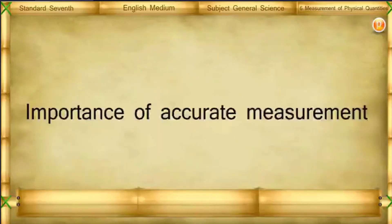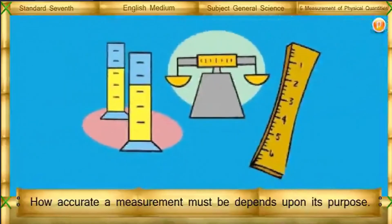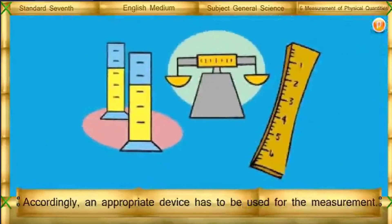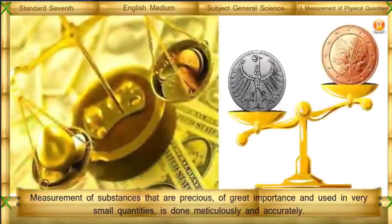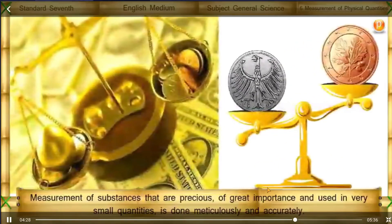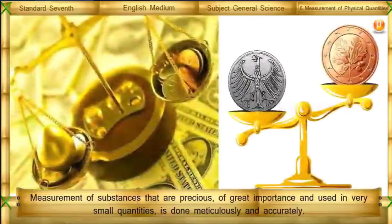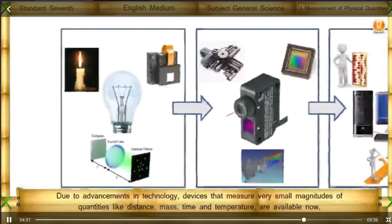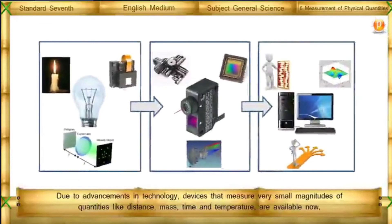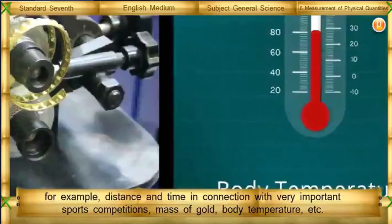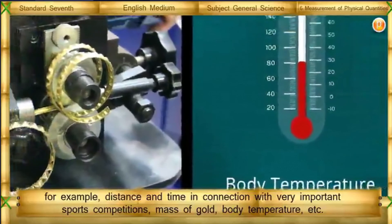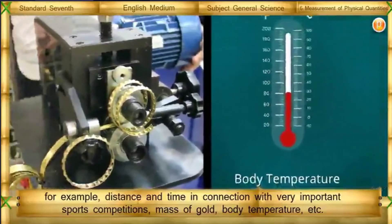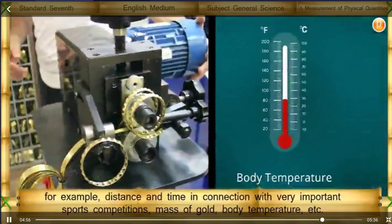Importance of accurate measurement: How accurate a measurement must be depends upon its purpose. Accordingly, an appropriate device has to be used for the measurement. Measurement of substances that are precious, of great importance, and used in very small quantities is done meticulously and accurately. Due to advancements in technology, devices that measure very small magnitudes of distance, mass, time, and temperature are now available — for example, in important sports competitions, measuring mass of gold, or body temperature.